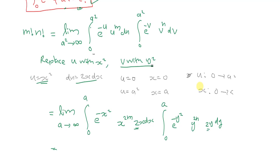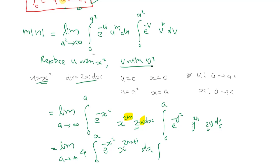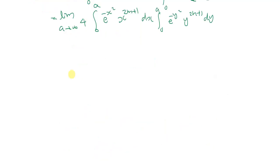Here we have a factor of 2 from 2x dx and another factor of 2 from 2y dy, so I can take 4 outside. This becomes: limit as a goes to infinity, 4 times the integral from 0 to a of e raised to minus x squared, x raised to 2m plus 1, dx, times the integral from 0 to a of e raised to minus y squared, y raised to 2n plus 1, dy. Now let us transform this equation to polar coordinates.